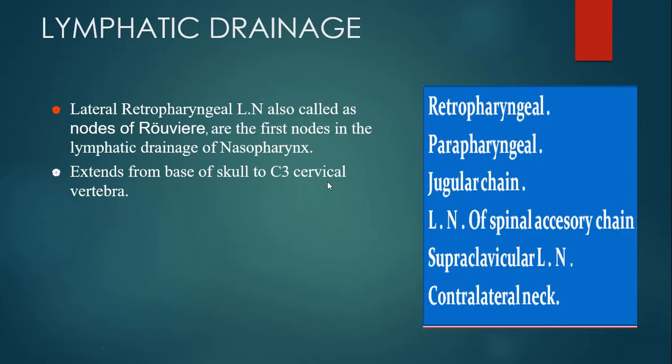What is the lymphatic drainage of the nasopharyngeal area? The lateral retropharyngeal lymph nodes, also called nodes of Rouviere, are the first nodes in the lymphatic drainage of the nasopharynx. Other nodes which also drain the nasopharynx include the retropharyngeal lymph nodes, parapharyngeal lymph nodes, jugular chain, lymph nodes of the spinal accessory chain, posterior cervical lymph nodes, supraclavicular lymph nodes, and contralateral nodes can also be involved.